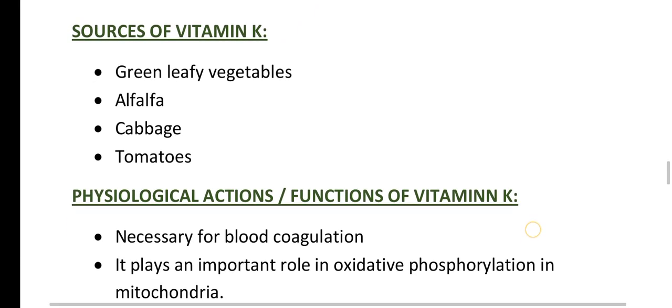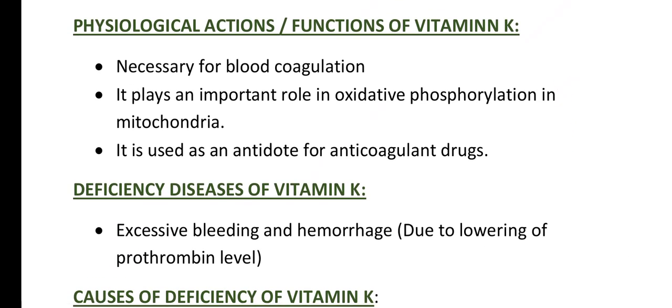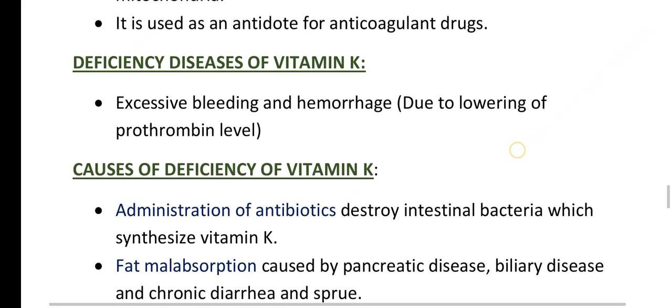Now coming to the sources of vitamin K. Vitamin K is obtained from green leafy vegetables, alfalfa, cabbages, and tomatoes. Now coming to physiological actions or functions of vitamin K. Vitamin K is necessary for blood coagulation, it also plays an important role in oxidative phosphorylation in mitochondria, and it is used as an antidote for anticoagulant drugs.